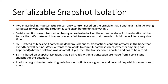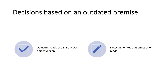As the name suggests, serializable snapshot isolation is based on snapshot isolation — all reads within a transaction are made from a consistent snapshot of the database. It also adds an algorithm for detecting serialization conflicts among writes and determining which transactions to abort.